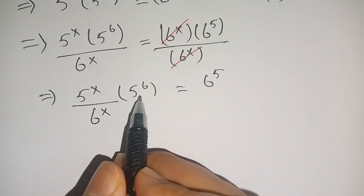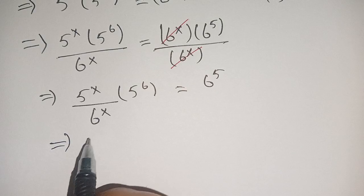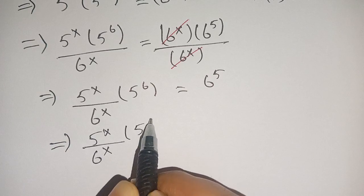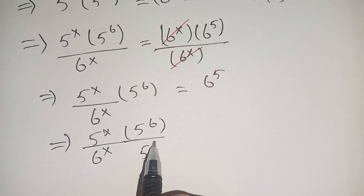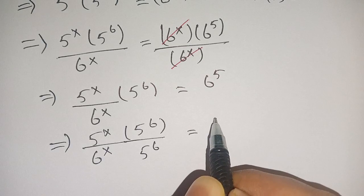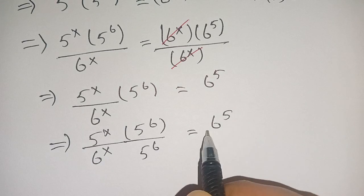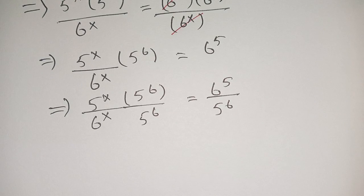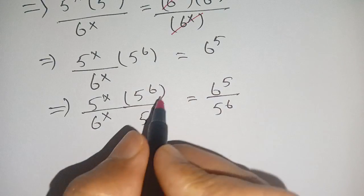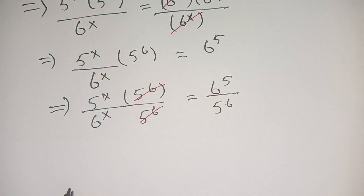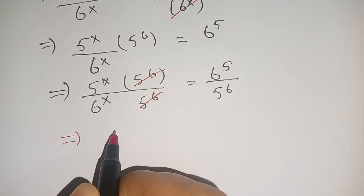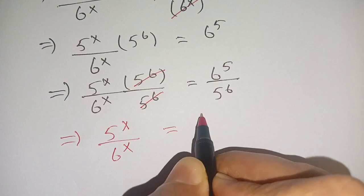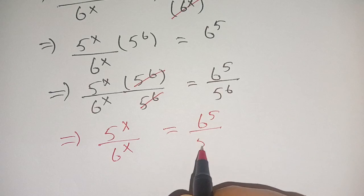On dividing both sides by 5^6, we get (5^x / 6^x) times 5^6 divided by 5^6 is equal to 6^5 divided by 5^6. We can cancel out 5^6 by 5^6. The remaining terms are 5^x divided by 6^x is equal to 6^5 / 5^6.